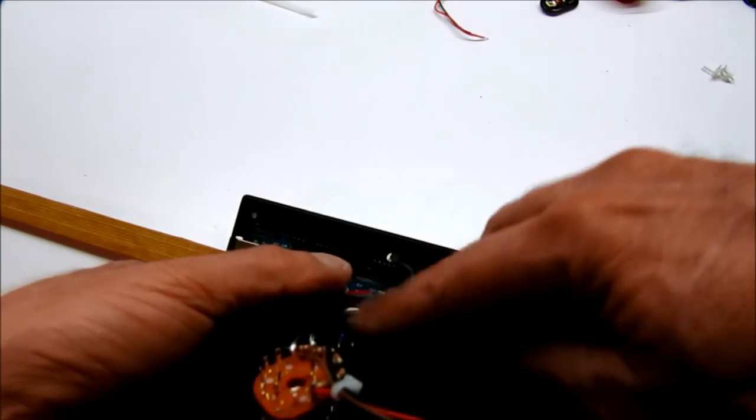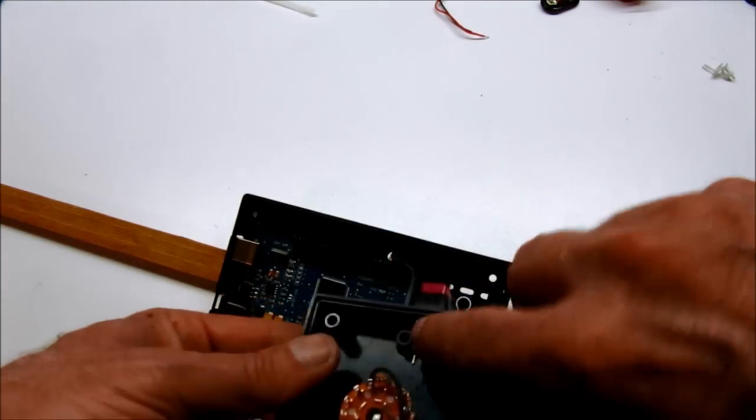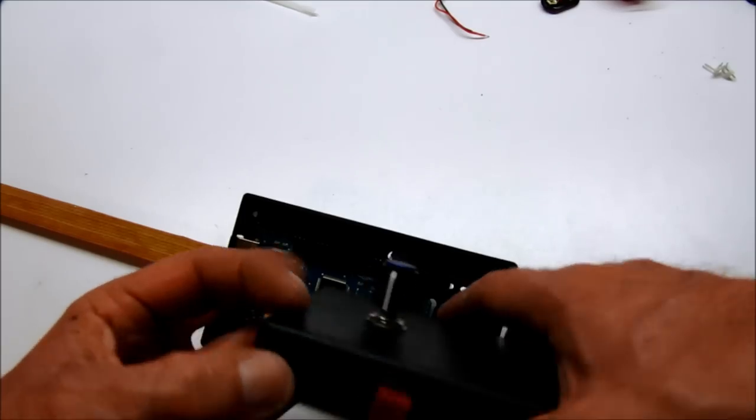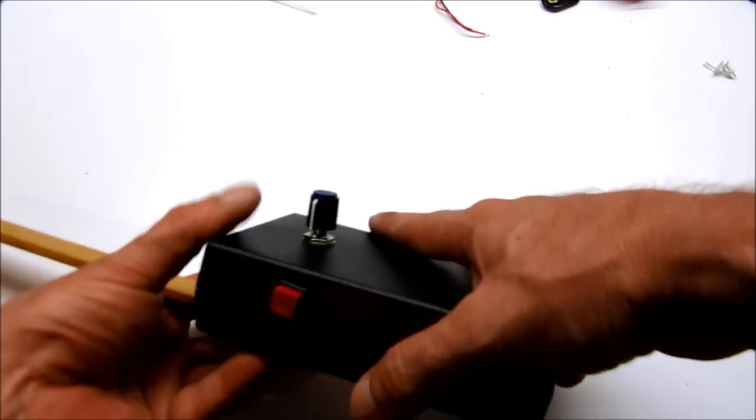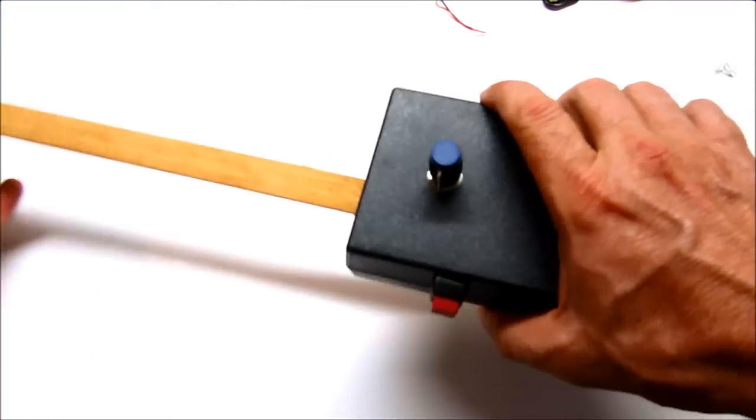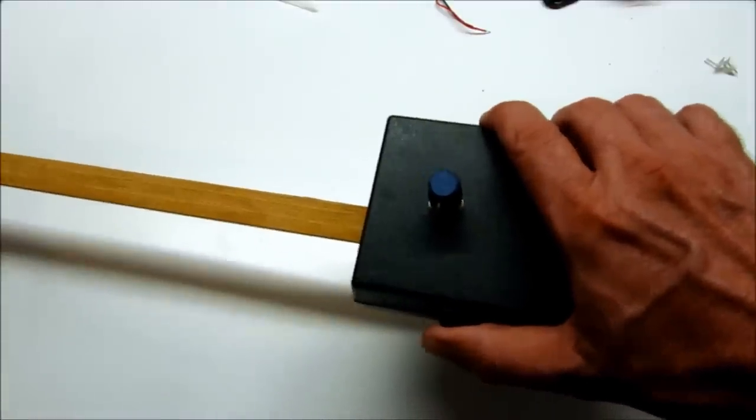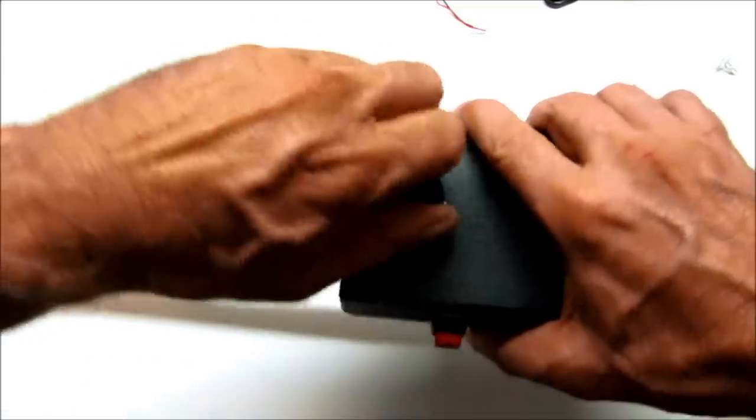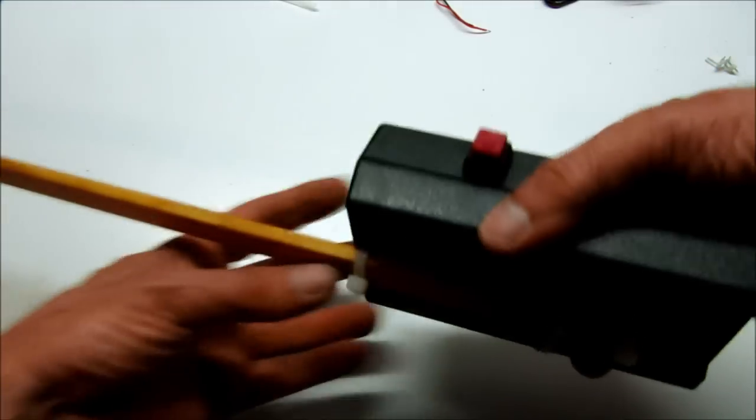Okay, so I've cut my hole for my momentary switch here and I've mounted it in. So now when all of this comes together here I'll be able to hold the unit like that and use that to apply power to it, switch programs, and use the strip.